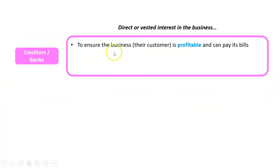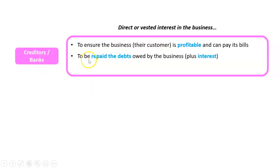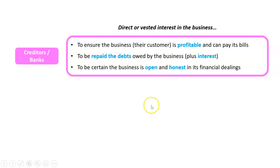So what do creditors and banks have as their direct or vested interest in the business? They want to ensure that the business is profitable and can pay its bills, because the business is essentially the customer of the creditor or bank. They also want to be sure that the business can repay its debts plus any interest if it's a loan.